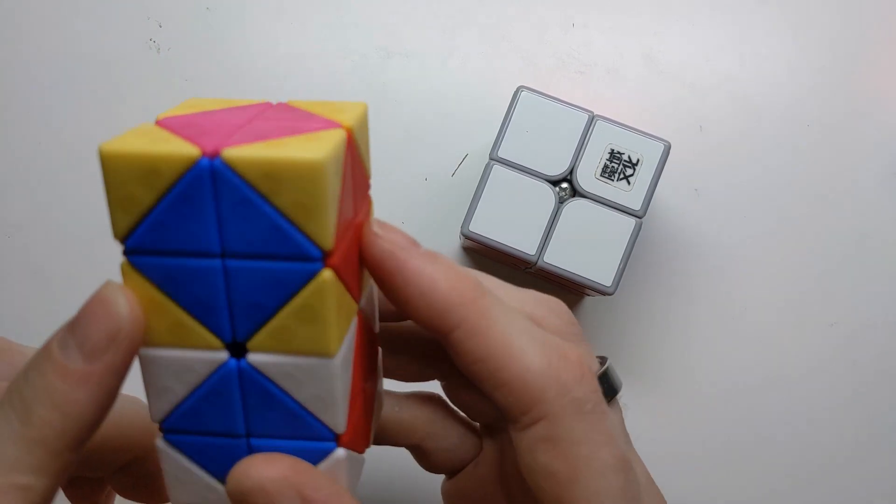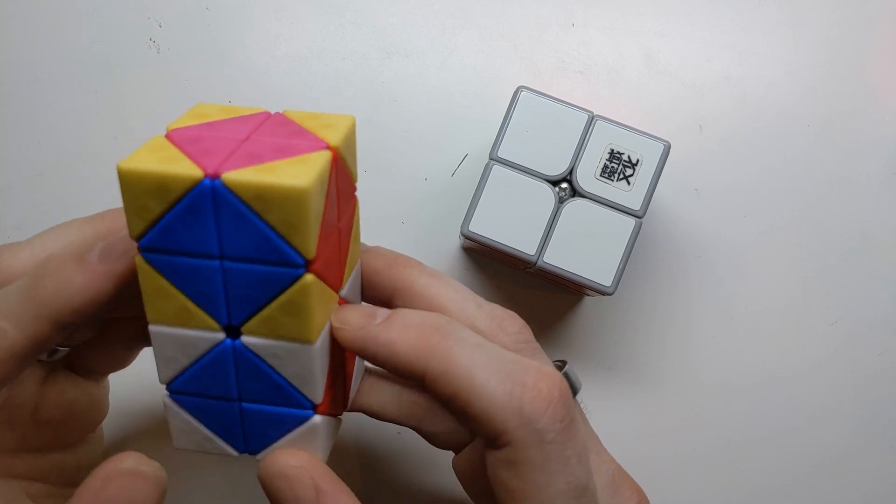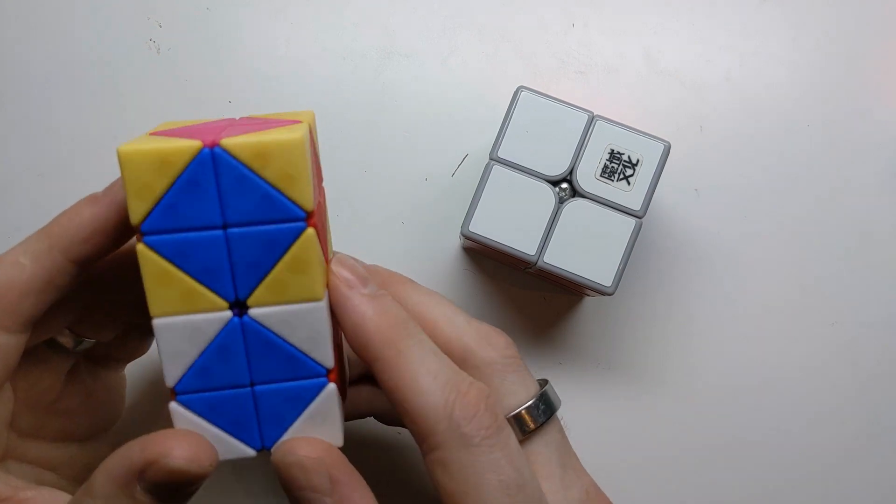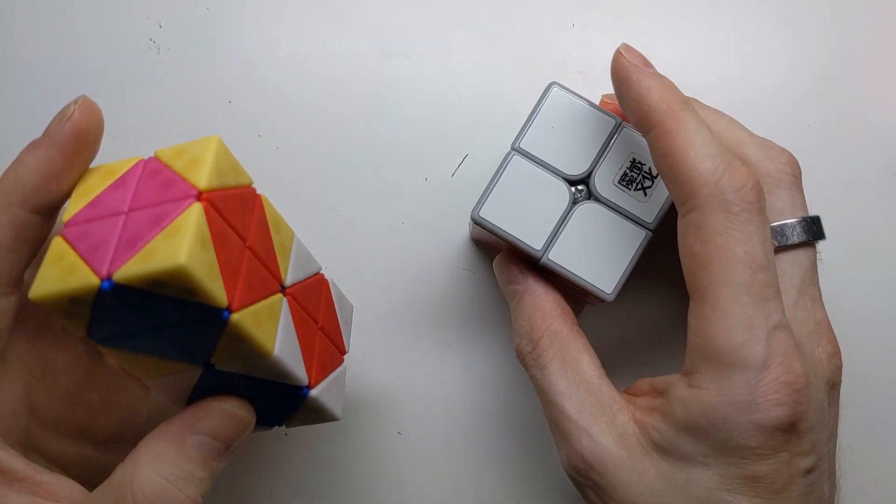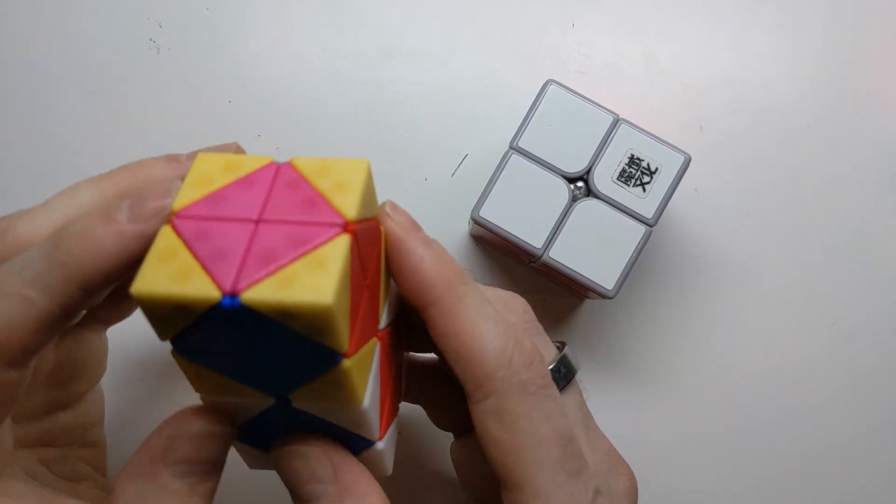And although this isn't actually four-dimensional, because like you, I live in a three-dimensional world, it does have all of the same mathematical properties. We have a total of eight colors, so we have the same colors as on the 2x2x2, plus pink and purple.